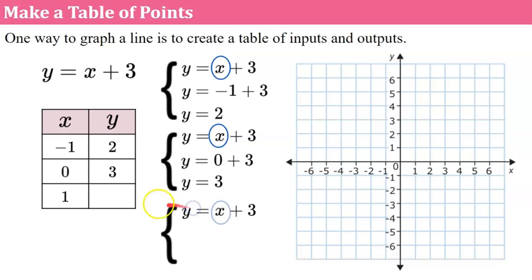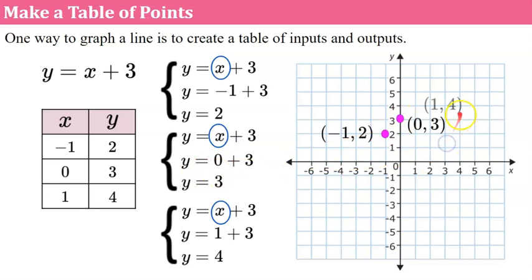We do it one more time and replace x with 1. Y equals 1 plus 3; 1 plus 3 is 4. We put that in our table. So now we can identify that these are ordered pairs: negative 1, 2 — so x is negative 1 and y is 2 — we plot our point. Then we have 0, 3, so we plot that point. And our last point, 1, 4 — we go to the right 1 and up 4 and plot our point.